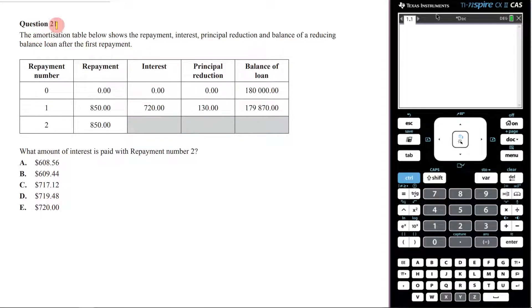All right, let's now answer this question here, question 21. The amortization table below shows the repayment, interest, principal reduction, and balance of a reducing balance loan after the first repayment. So here it is right here.